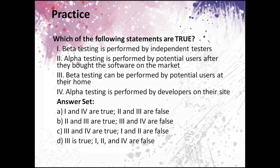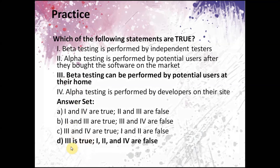Statement three: alpha testing is performed by potential users after they bought the software on the market — that's false, because alpha testing is done before the software is released to the market. Statement four: beta testing can be performed by potential users at their home — this is true, as beta testing can be performed at a user's location, any place. Statement five: alpha testing is performed by developers on their site — this is false, because developers are not involved in alpha testing or beta testing. So the correct answer is D, where the third statement is true.